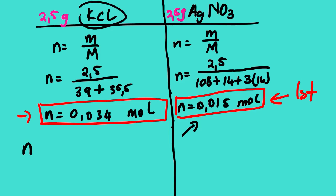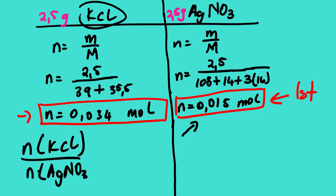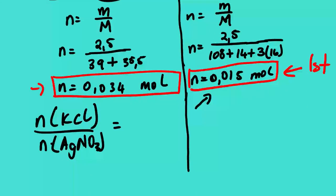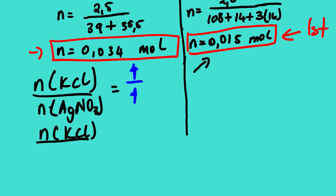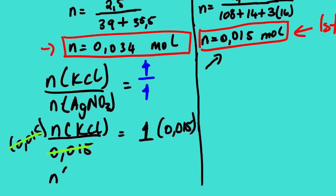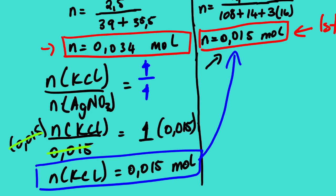We are going to use a molar ratio. Since we are testing potassium chloride, we set: number of moles of KCl divided by number of moles of AgNO₃ equals 1 over 1, since the equation is balanced with a 1:1 ratio. The number of moles of silver nitrate we have is 0.015, so multiplying both sides by 0.015, the number of moles of potassium chloride needed is 0.015 mol. This is our second number of moles needed to consume silver nitrate completely.